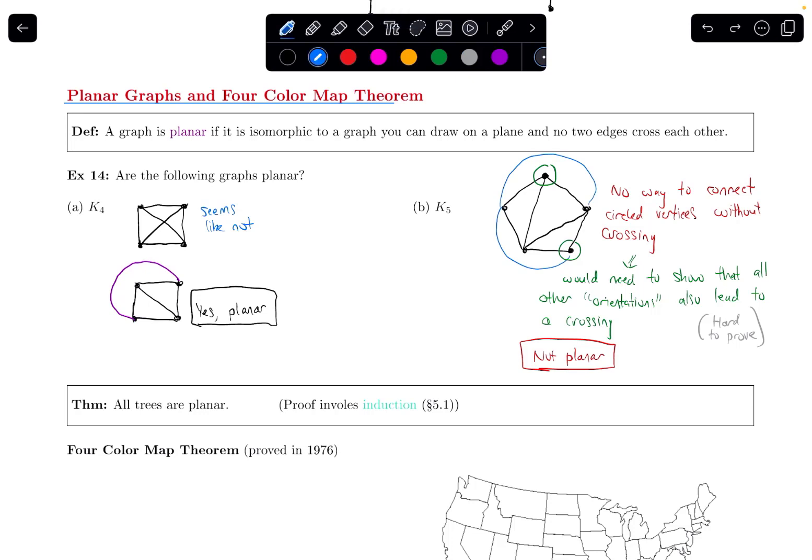So I want to end this video with two key theorems. The first one says that all trees are planar. Remember, a tree is a graph that looks like, and I'll draw an example. Here is an example of a tree. A tree is something that is connected. It's a simple graph, no multiple edges, no loops, and there's no cycles in the graph. We've seen a bunch of trees already in previous videos. But any tree, it's possible to draw it without having any of the edges cross each other, just like I did here. So they are all planar. Proving that requires induction. That's one of the ways to prove it, which we talked about in section 5.1.